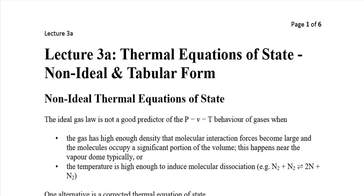This normally happens near the vapor dome. Also, if we have a high temperature, that high temperature induces molecular dissociation. For example, talking about nitrogen as a diatomic molecule — if it dissociates, it becomes a monatomic particle, and obviously the monatomic nitrogen behavior will not be the same as the diatomic particle, so there will be some difference in the behavior of those gases.